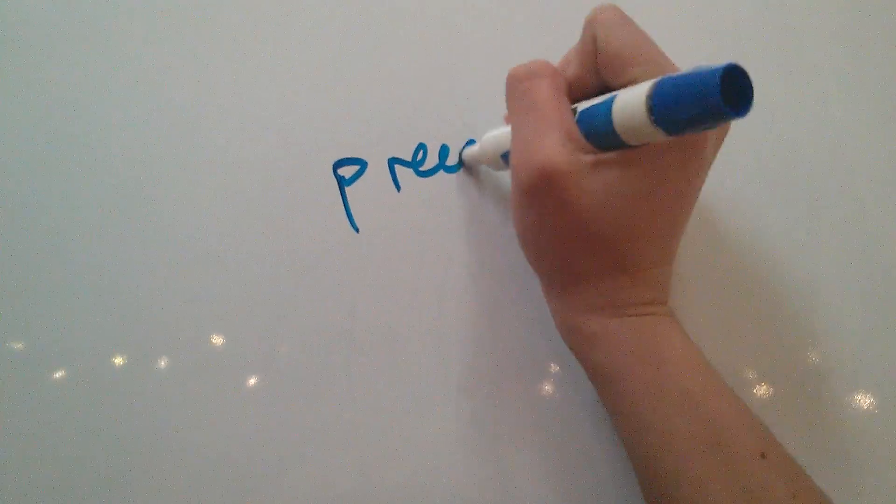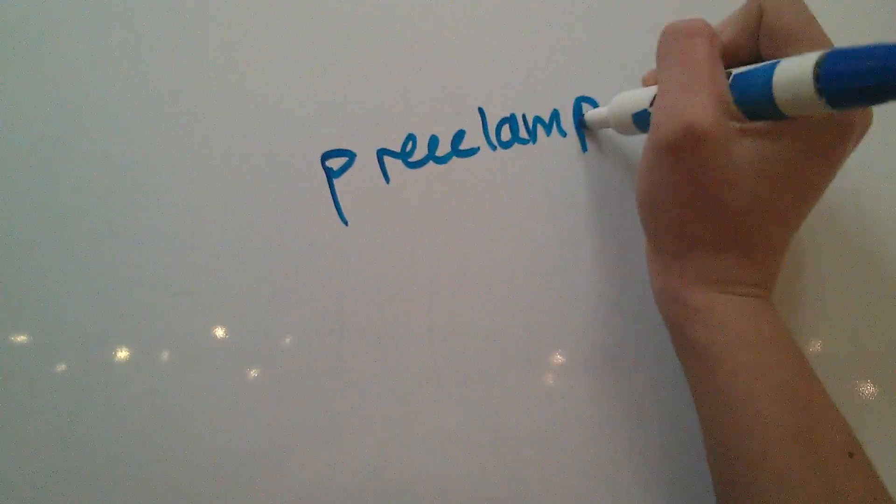Okay, so this video is going to be about the pathophysiology of preeclampsia. So what happens in a normal pregnancy is different from what happens in a preeclamptic pregnancy. In a non-pregnant woman, for example, you have the spiral arteries.